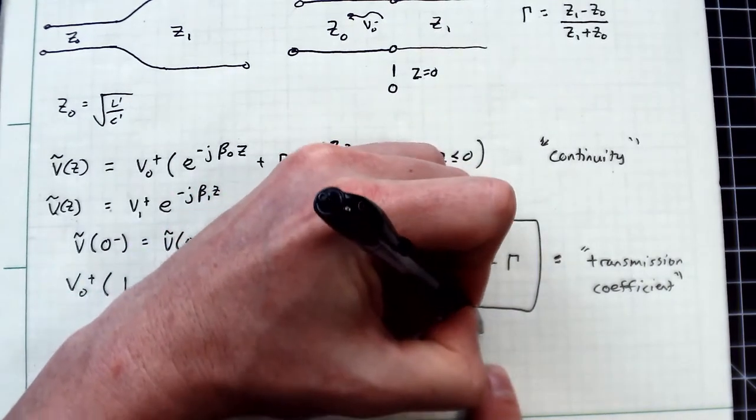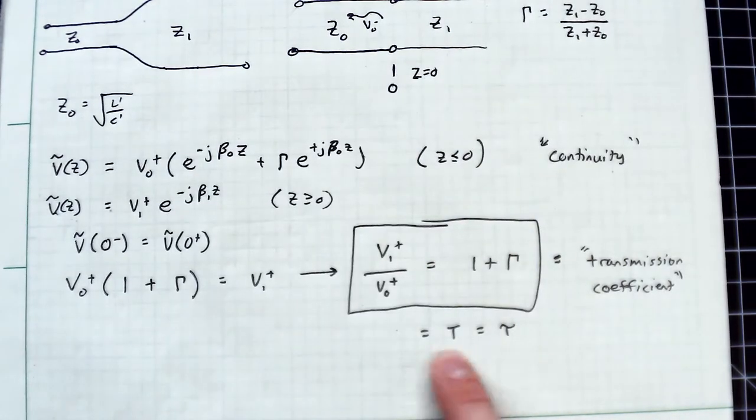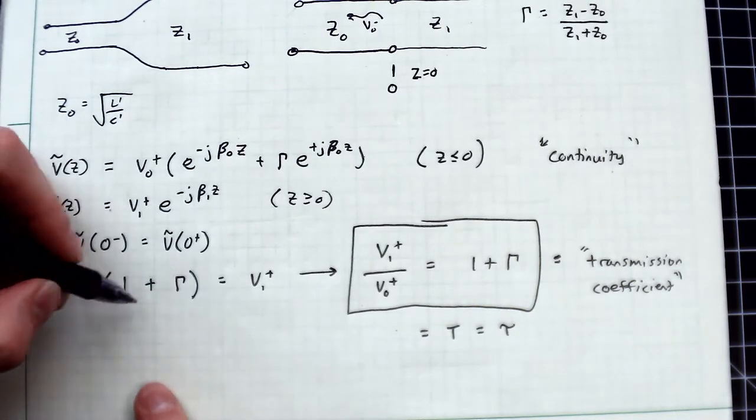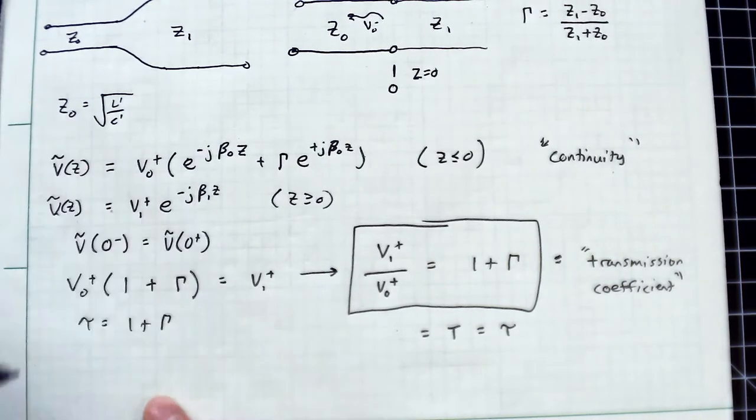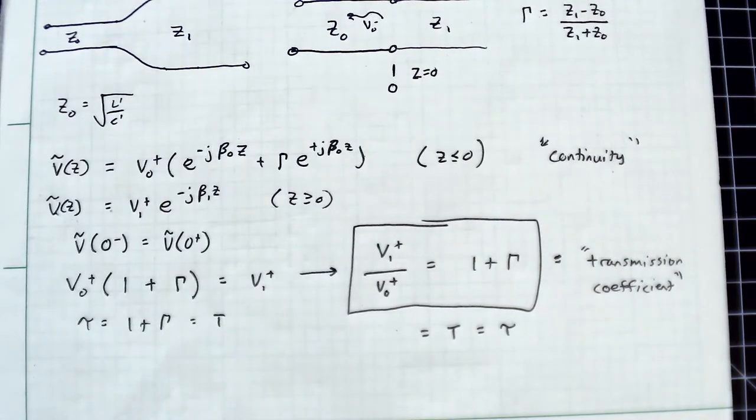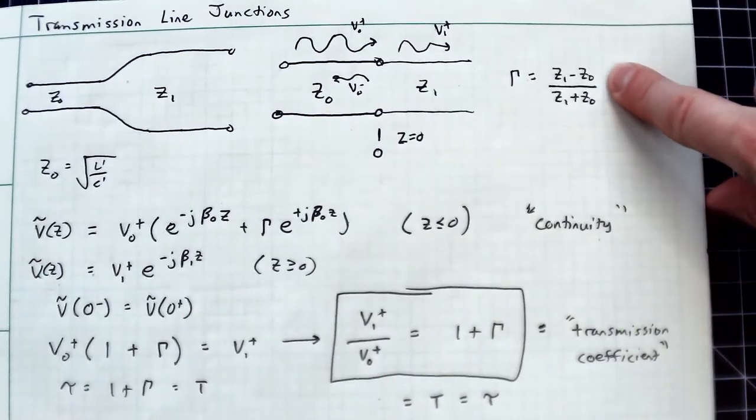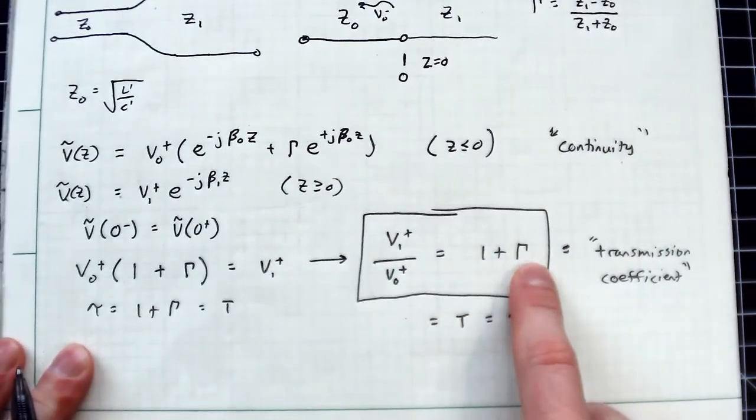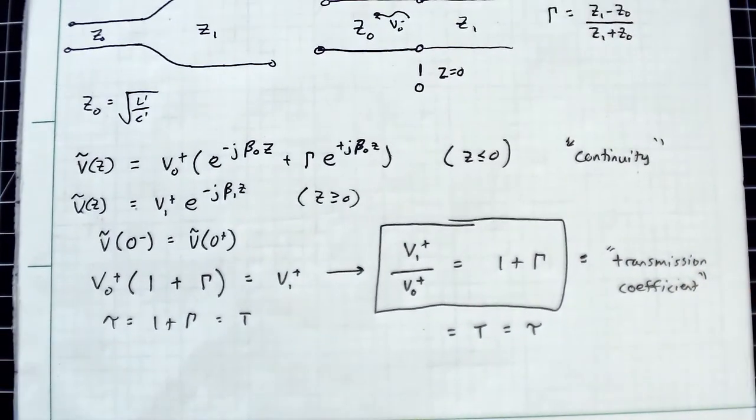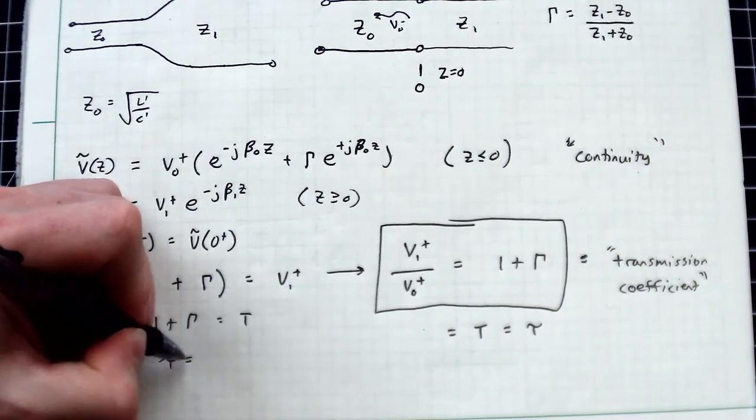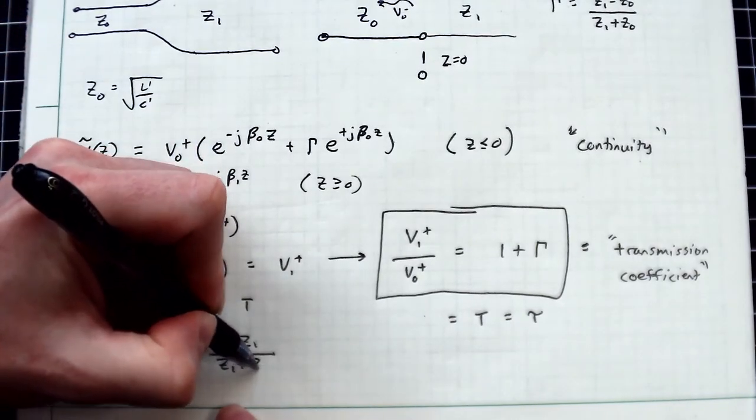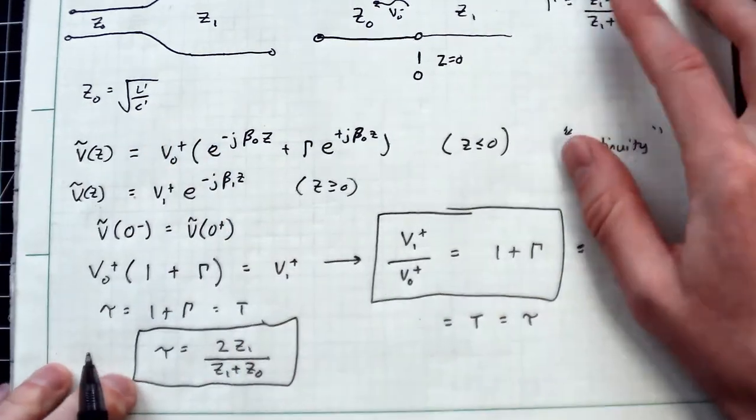Personally, I kind of hate that. I'd rather use τ. That's how other references denote this coefficient. So τ equals 1 plus γ, or capital T equals 1 plus γ. Remember that γ has an expression we can calculate based on this junction. Substituting that in, you get 1 plus γ, and doing some straightforward algebra, you'll find that τ equals 2Z₁ divided by Z₁ plus Z₀.